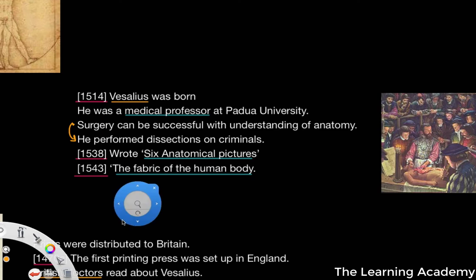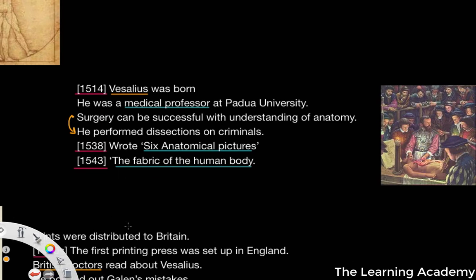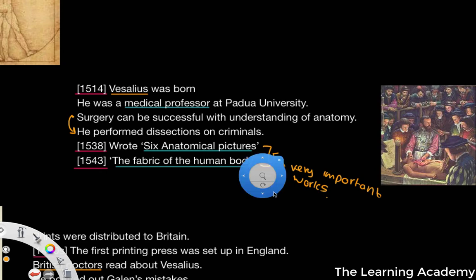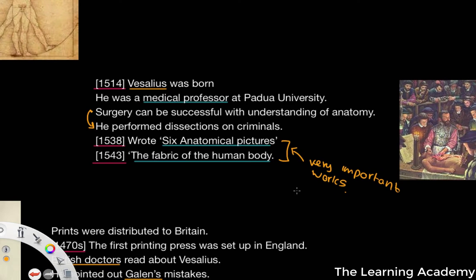As a result, in 1538 he wrote six anatomical pictures, and in 1543 he wrote The Fabric of the Human Body — two very important works. This development of learning about the body as a tool to develop medicine was really one key thing that signified the age of the Renaissance.